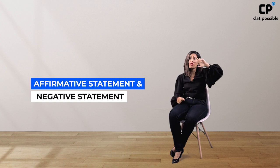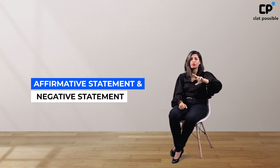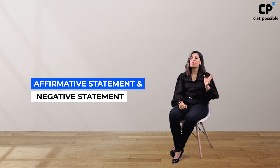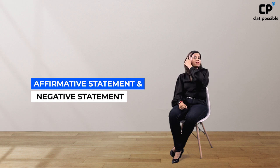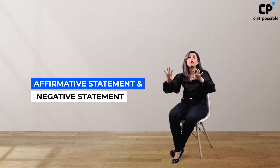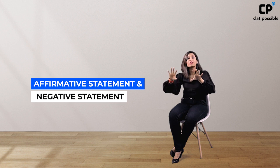So if you have a 'no' plus 'some' — for example, 'No A's are B's' and 'Some B's are C's' — for such two statements, your answer can never be a 'some' answer. It will always be a 'some not' answer.